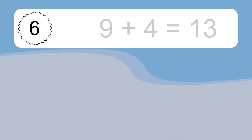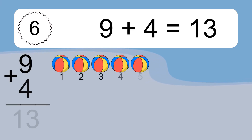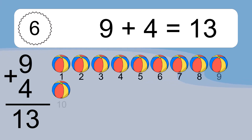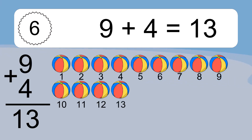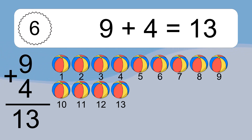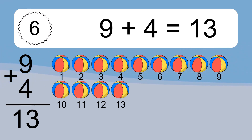9 plus 4 equals what? 9 plus 4 equals 13. Let's count it. 1, 2, 3, 4, 5, 6, 7, 8, 9, 10, 11, 12, 13.